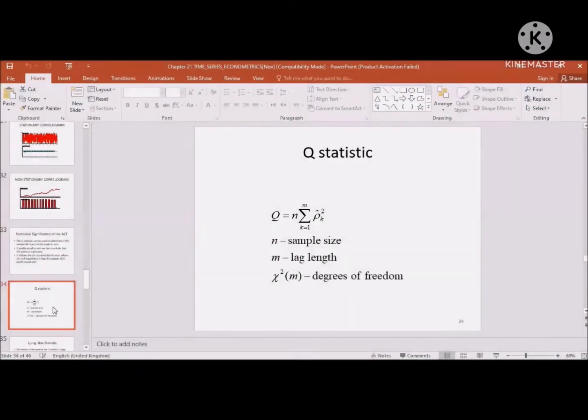This is the formula for Q-statistics. The formula is N summation K equal to 1 to M, K squared to N.